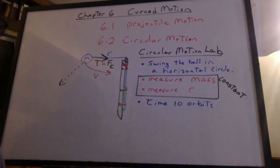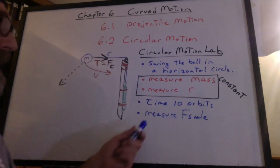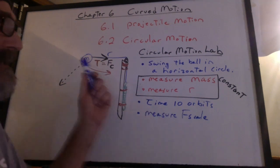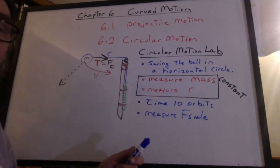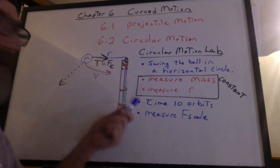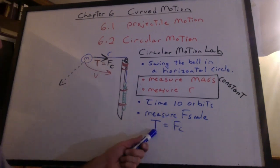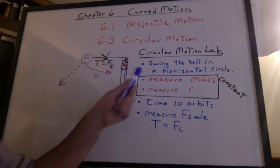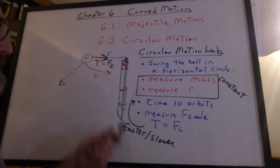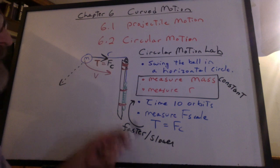Time 10 orbits. And at the same time, measure the force of the scale. Now you can keep it going for a while after you're done hitting the stopwatch and then read the scale. But try to maintain a constant rate. The reading on the scale is the tension in this string producing the force needed to keep it in the circle. Do it faster. Do it slower. Do it a few times.